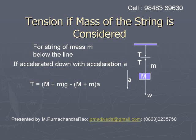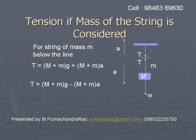If the system is moving down with an acceleration a, then the tension will be (M plus m) times g minus (M plus m) times a. This is the relation for tension when we consider the mass of the string.